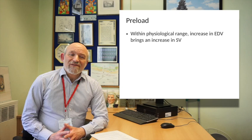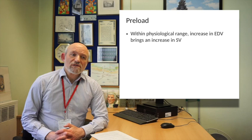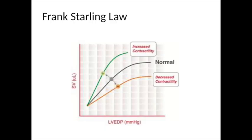Within the physiological range of activity, any increase in end diastolic volume will bring about an increase in stroke volume for a constant heart rate. You'll see on the next slide the very well-known Frank-Starling law, which relates the stroke volume to left ventricular end diastolic pressure or volume. In essence, the heart empties everything that is put into it in circumstances of health.